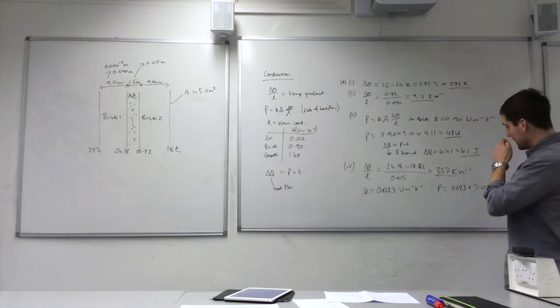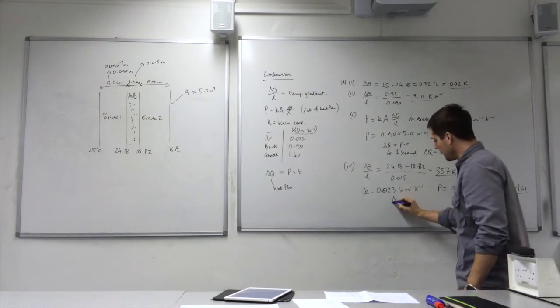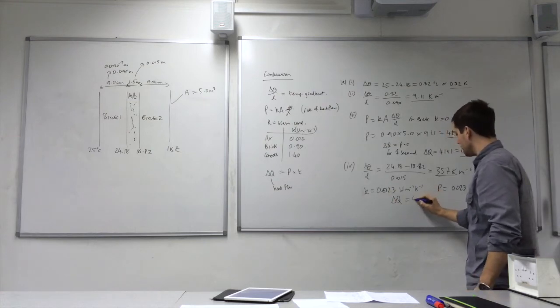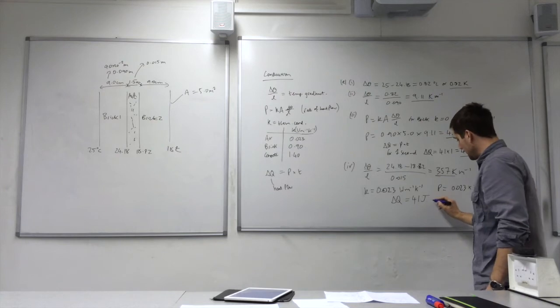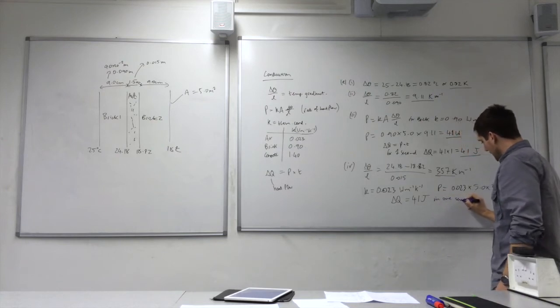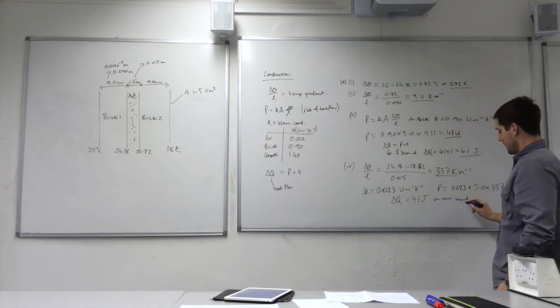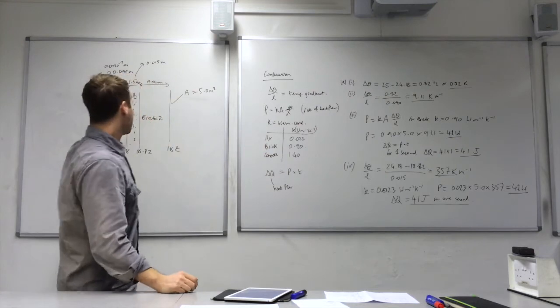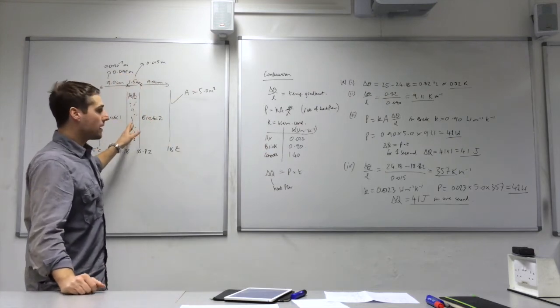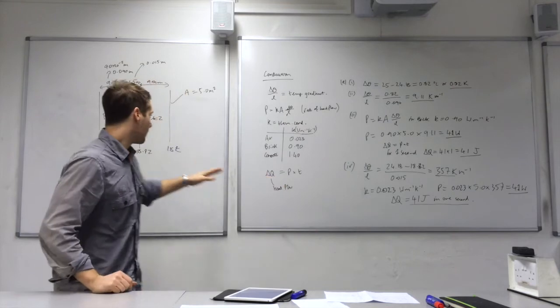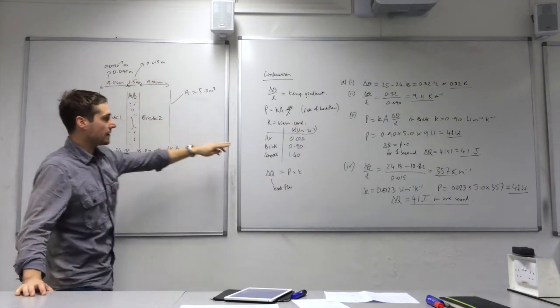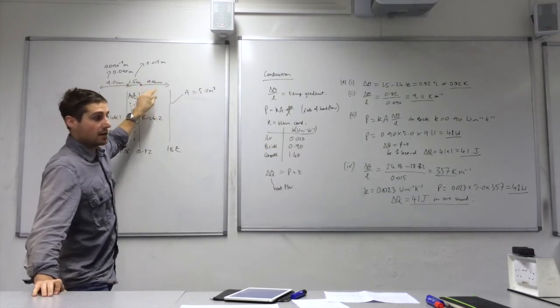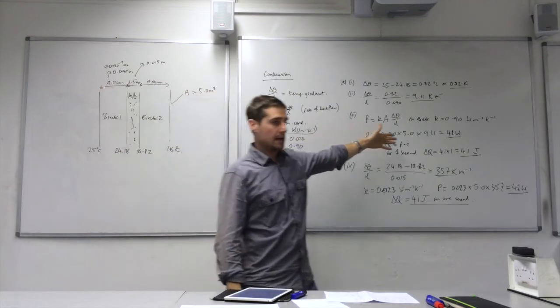So that's our rate of heat transfer. And then the actual energy that flows through in one second would be the same value, 41 joules. So we've done the calculations for this layer and this layer. The question also includes calculating for brick two. But as you can appreciate, this brick has the same thermal conductivity value as the original brick. And it also has the same thickness. So for that reason, we would expect to get the same value.